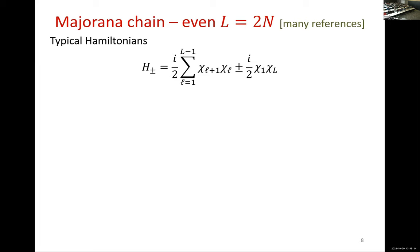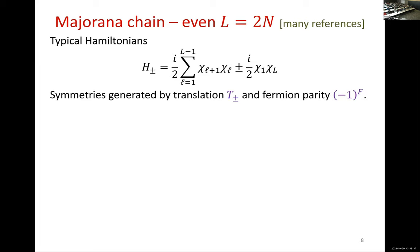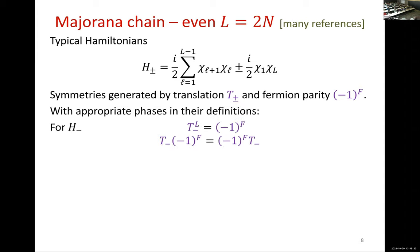Let's discuss the even L theory. We have two symmetries. I'll do simultaneously the plus and minus — periodic or anti-periodic. We have two symmetry transformations, T+ and T−, in different theories. We have fermion parity. We can redefine phases such that T− to the L is (−1)^F — the statement that as we go all the way around the chain, we get a minus sign on fermions and plus sign on bosons. This is the statement of anti-periodic boundary conditions. And translation commutes with (−1)^F.